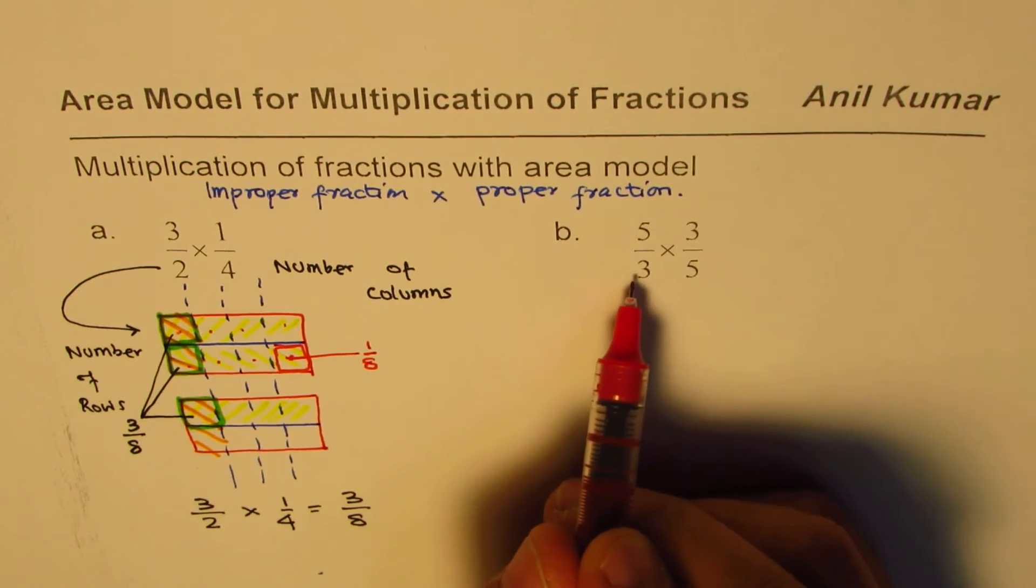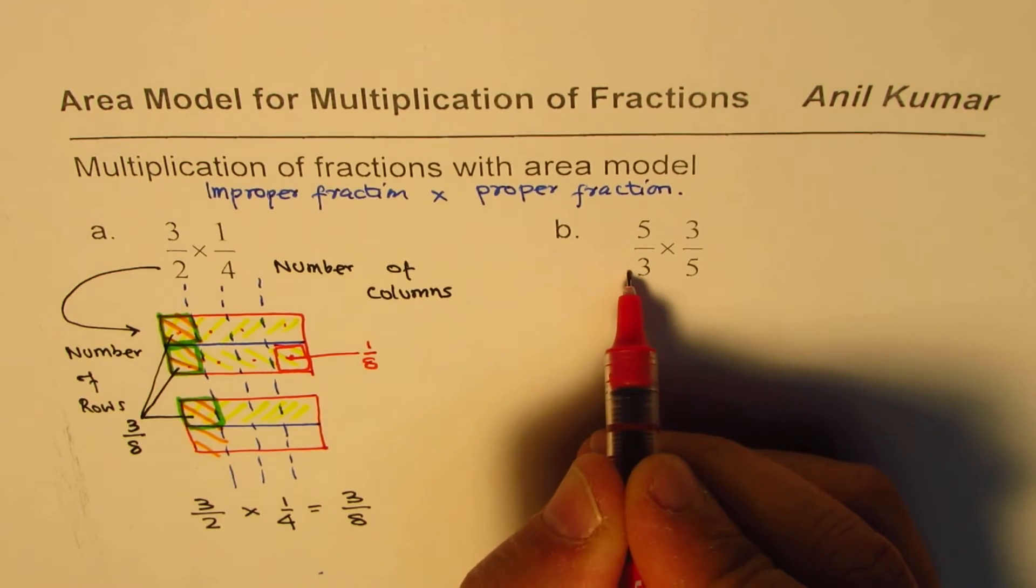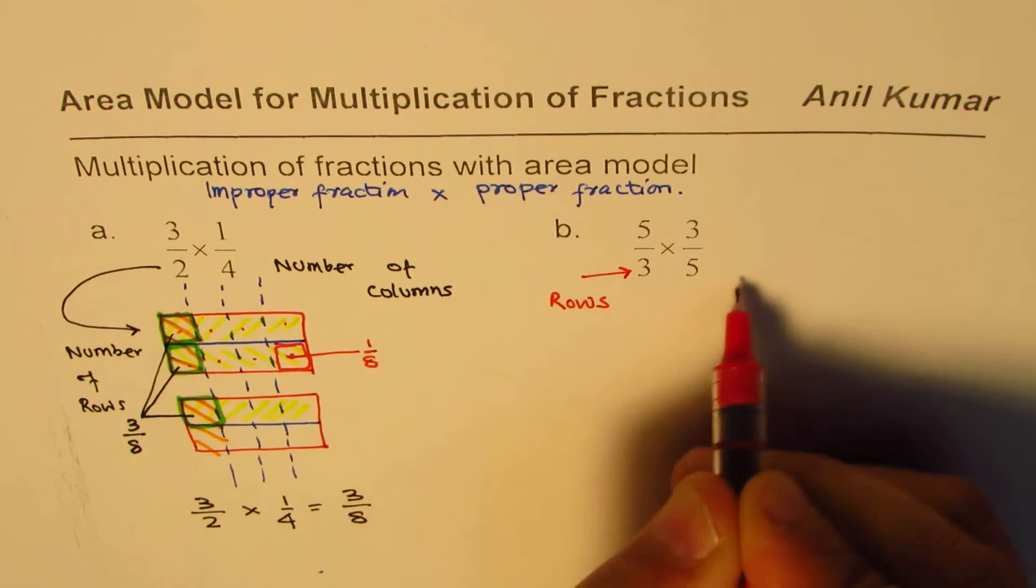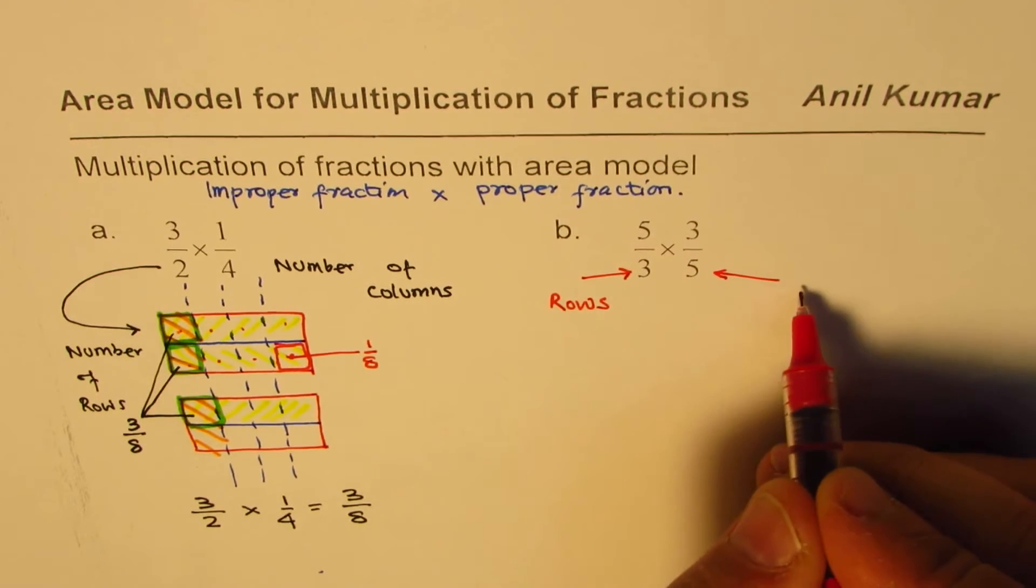So first step, make a rectangle, divide it into 3 equal parts. So this goes for rows. And that will be for number of columns.